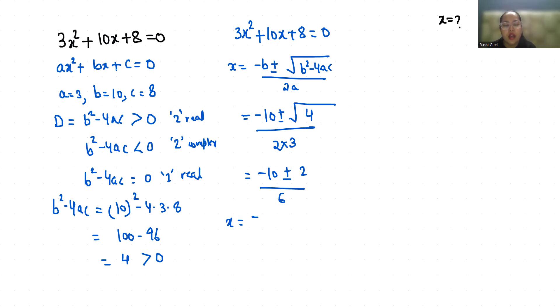So x = (-10 + 2) / 6 and x = (-10 - 2) / 6. So x = -8/6 and x = -12/6. Therefore x = -4/3 and x = -2. These are the two possible values of x.